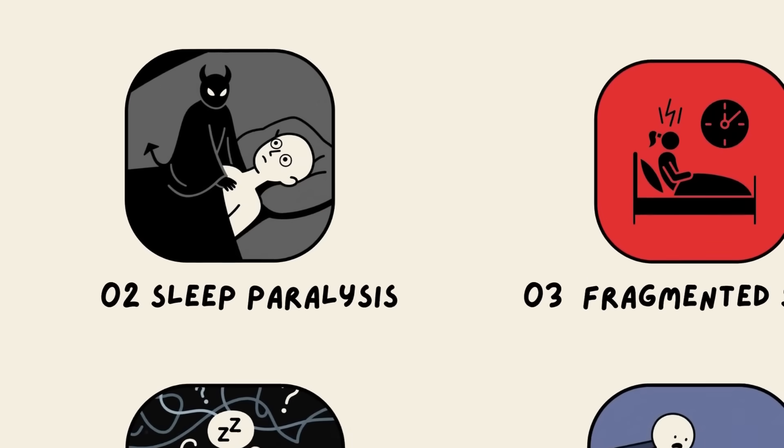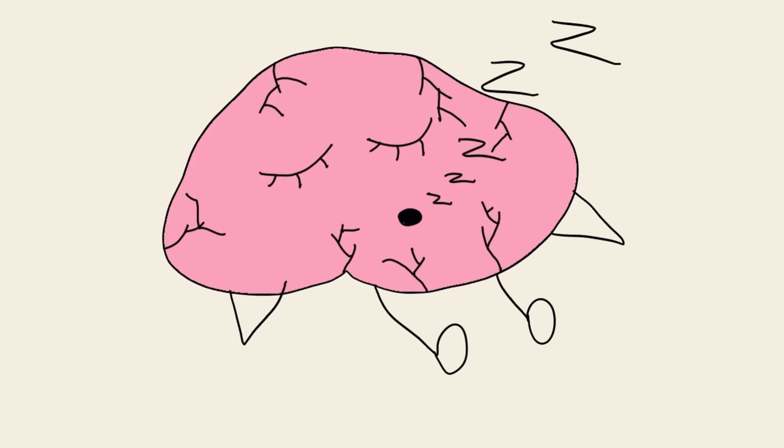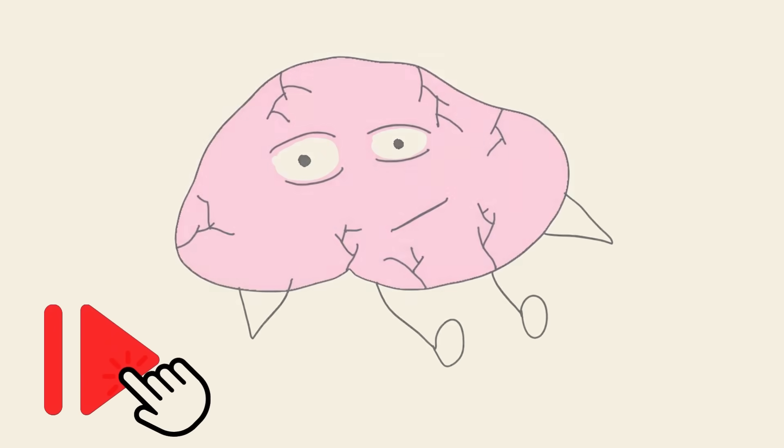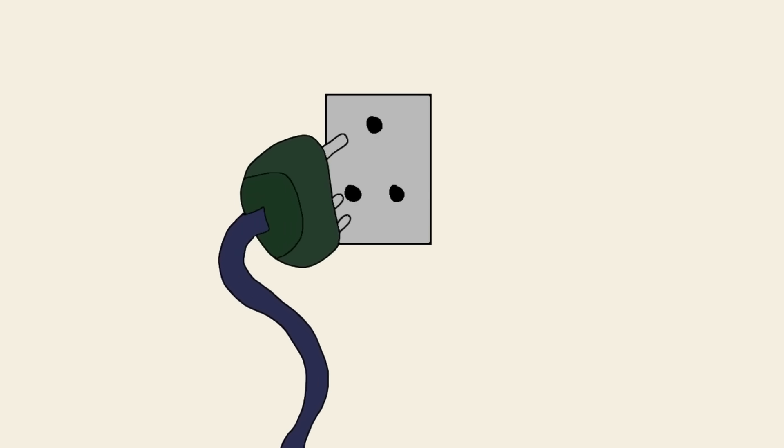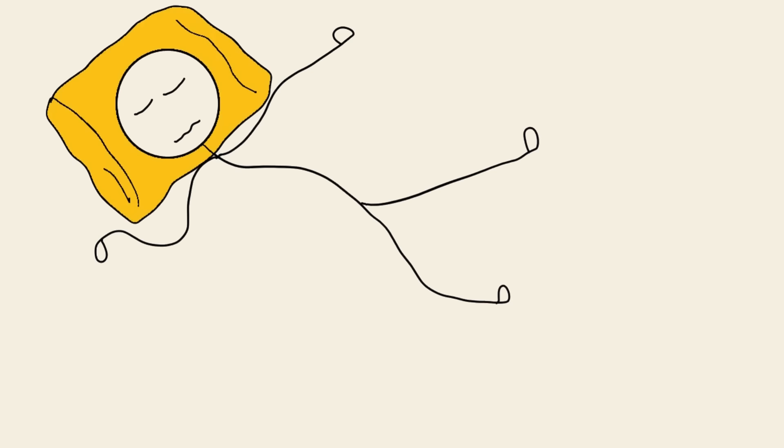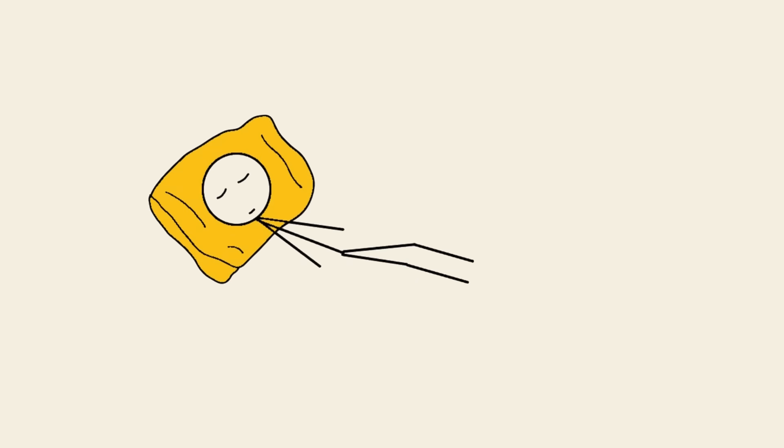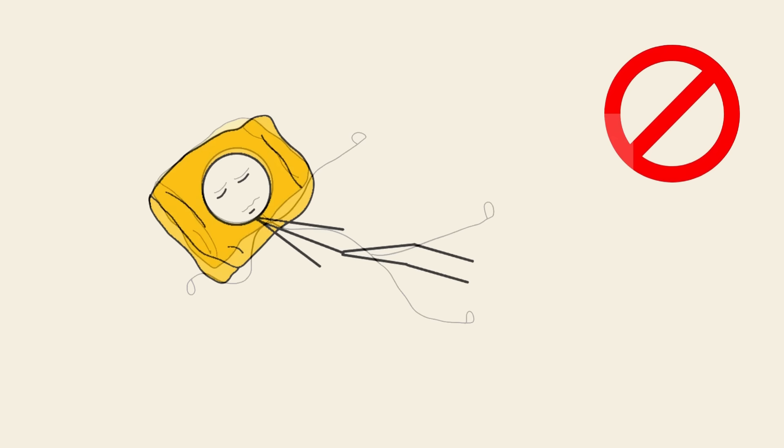Then there's sleep paralysis, the next-level nightmare where your brain wakes up but forgets to hit resume on your body. You're fully conscious but completely frozen, like someone unplugged your controller. This happens during the transition out of REM sleep when your body is still in lockdown mode, a natural function meant to prevent you from acting out dreams.